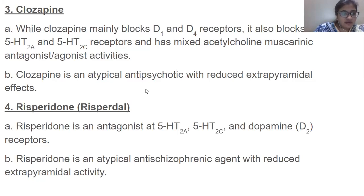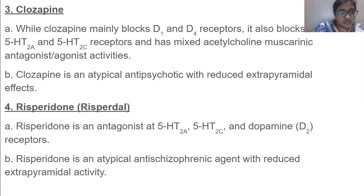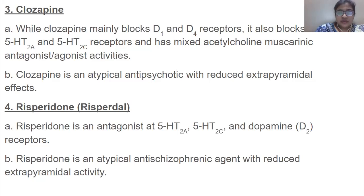Then we have risperidone. It is an antagonist of 5-HT2A, 2C, and dopamine receptors. Risperidone is an atypical antischizophrenic agent with reduced extrapyramidal effects.